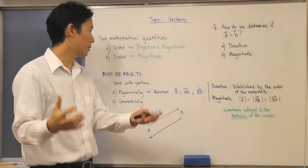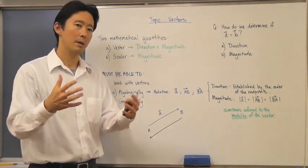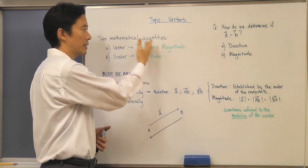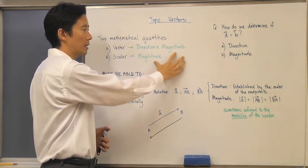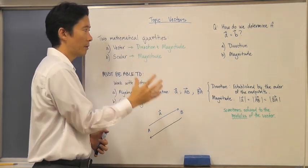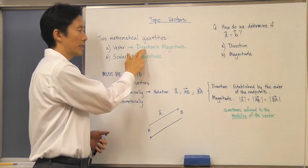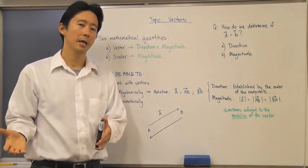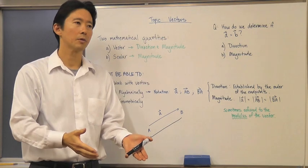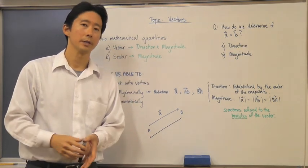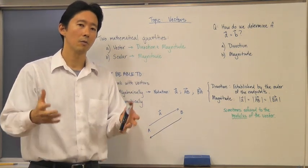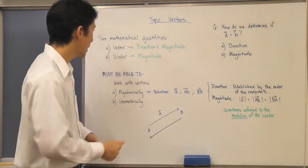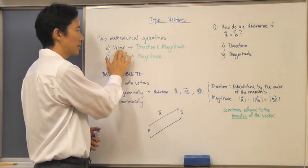Magnitude refers to a particular numerical value associated with a particular quantity. Both vectors and scalars have that characteristic, but only the vector also has direction. So if you want to determine whether something is a scalar or a vector quantity, the most important question to ask is: does that quantity also have direction? If it does, then you know you're dealing with a vector.